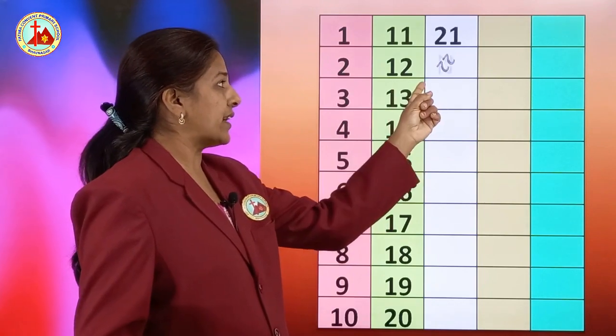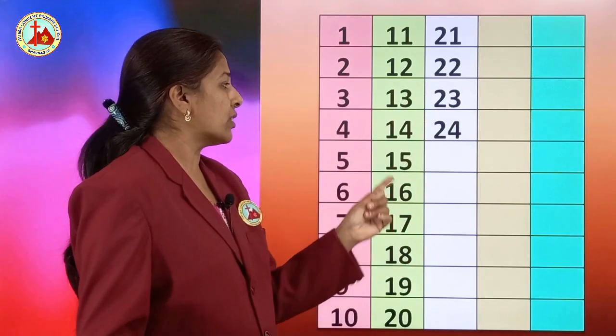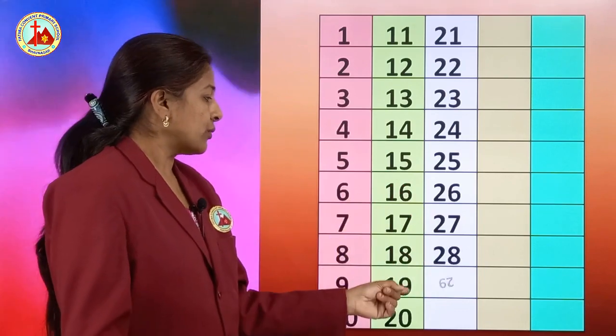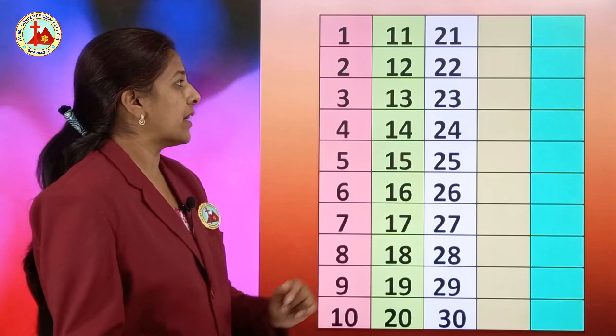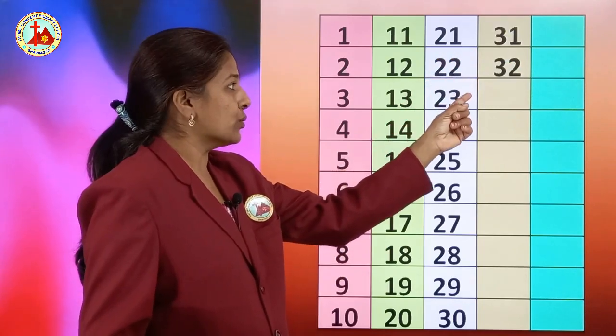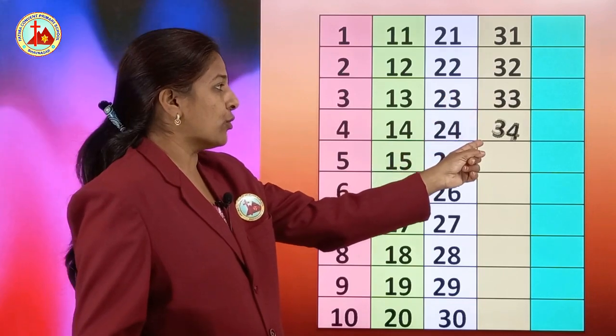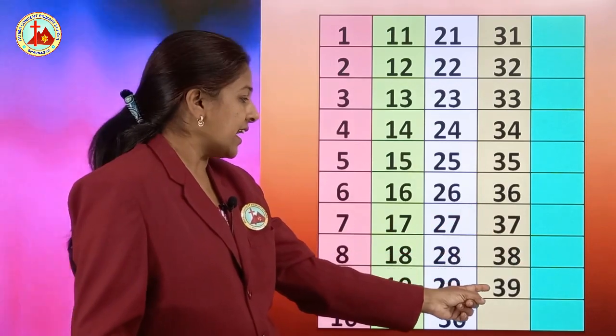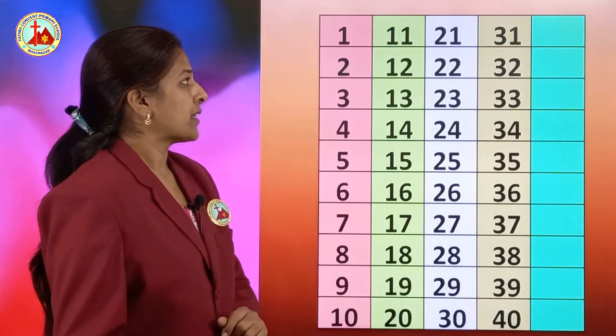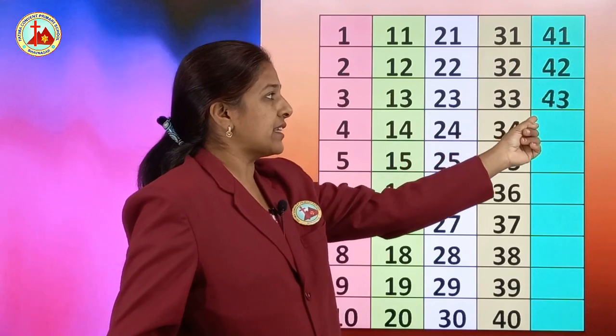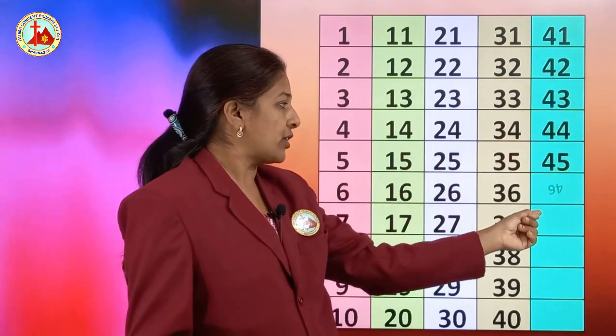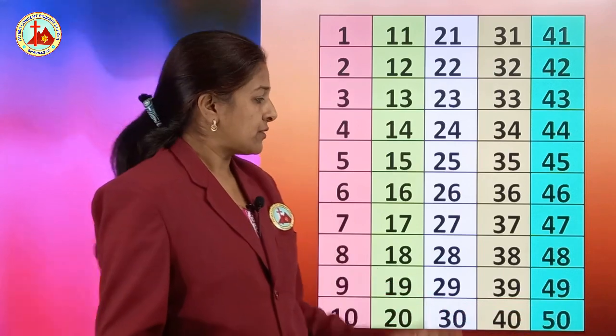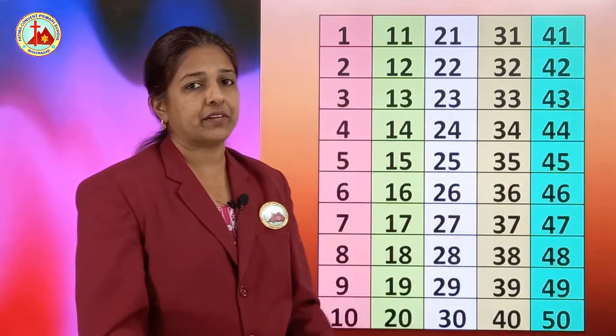Then 21, 22, 23, 24, 25, 26, 27, 28, 29 and 30. After 30, 31, 32, 33, 34, 35, 36, 37, 38, 39 and 40. 41, 42, 43, 44, 45, 46, 47, 48, 49, 50. These are numbers from 1 to 50.